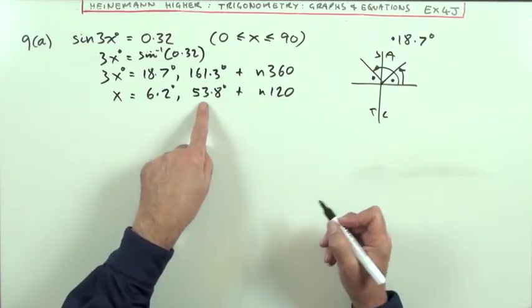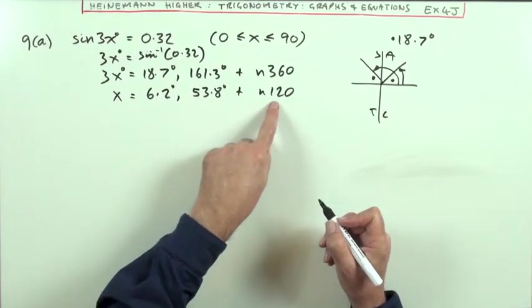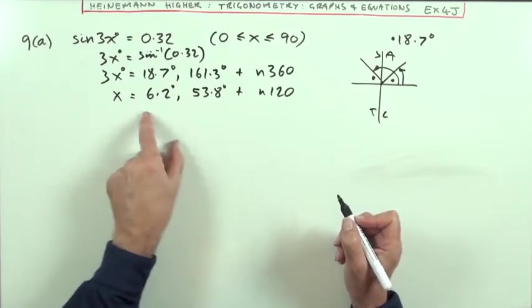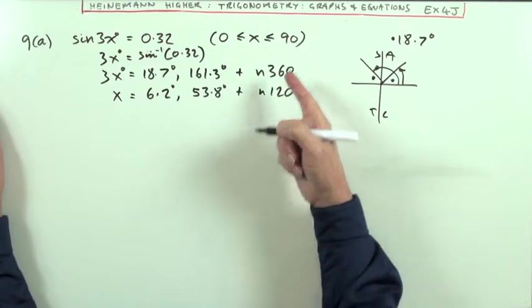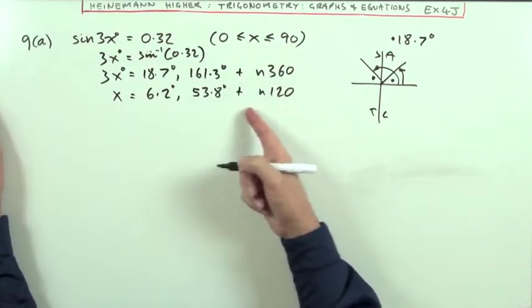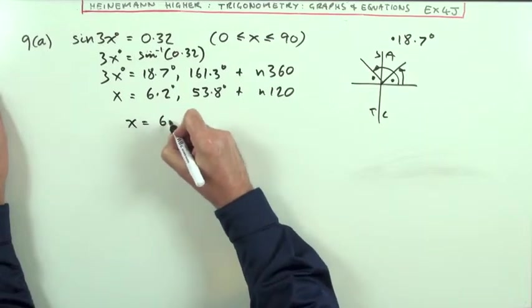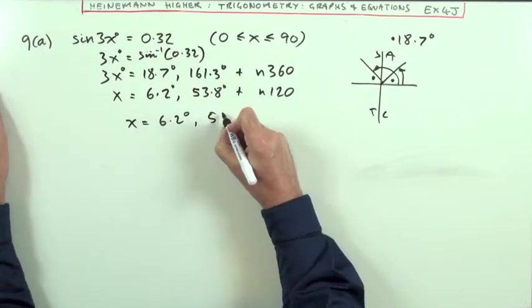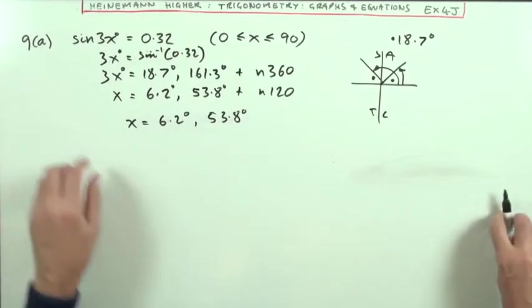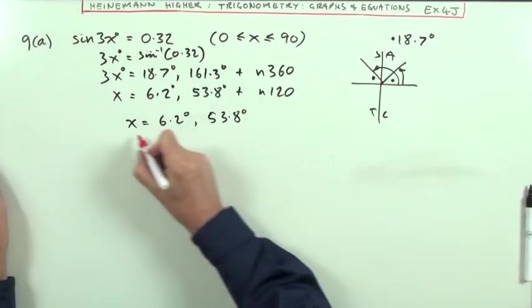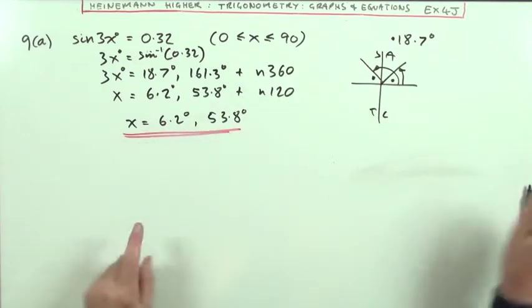This gives answers of 6 degrees, 53 degrees, plus as many more as needed by adding 120. But the answer is to stop at less than 90, so we don't require any more from the general solution. My final answer is 6.2 degrees and 53.8 degrees.